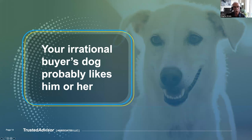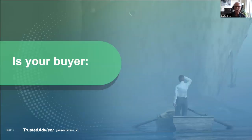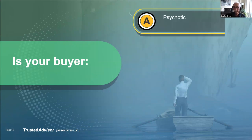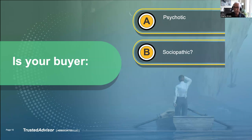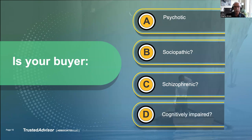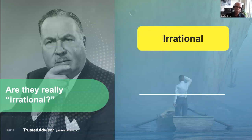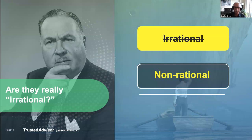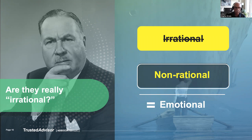Let's define the term 'irrational' when we talk about irrational buyers. Your so-called irrational buyer's dog probably likes him or her — so let's be careful when we toss that word around. Ask yourself: is your buyer actually psychotic, sociopathic, schizophrenic, or cognitively impaired? Those would be valid uses of the term irrational. I don't think that's usually the case. Oftentimes we say irrational when we'd be better off saying non-rational — it allows us to talk much more about emotional issues.